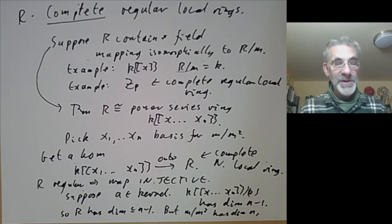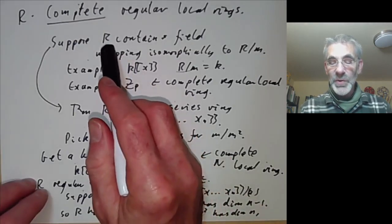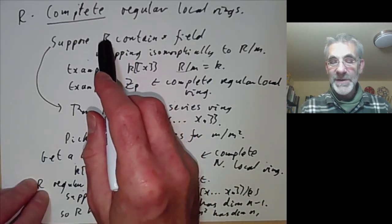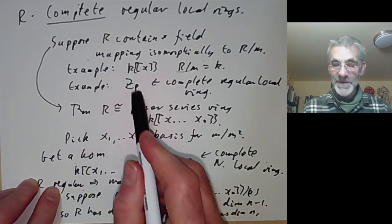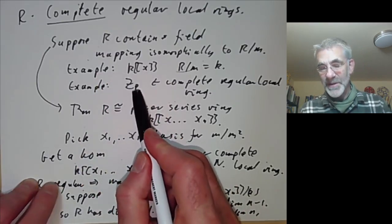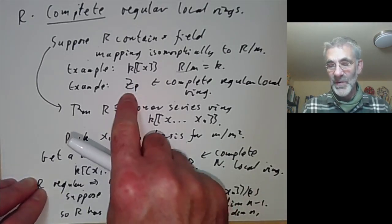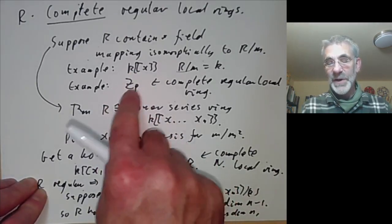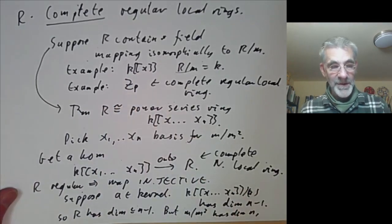This is actually a special case of the Cohen structure theorem for complete regular local rings, which describes more generally what happens if R doesn't contain a field. As you can see by looking at the p-adic integers, things get more complicated — you need a discrete valuation ring appearing in the conclusion.